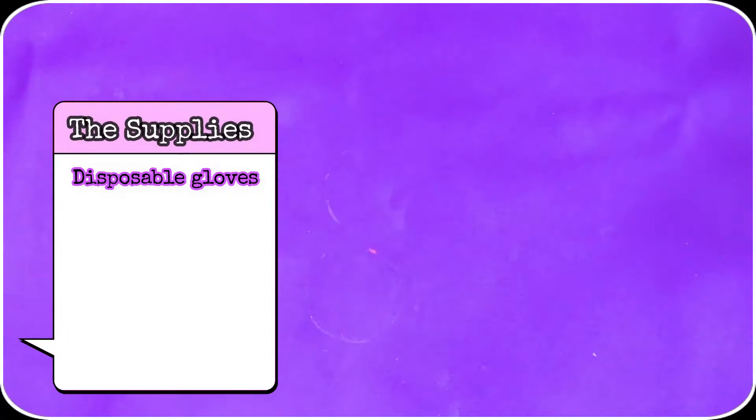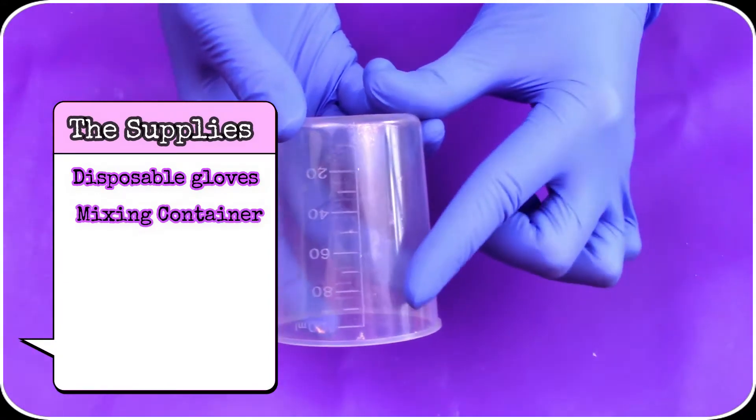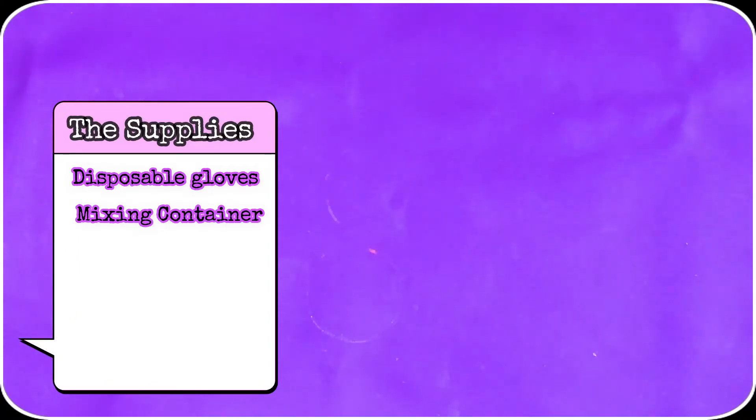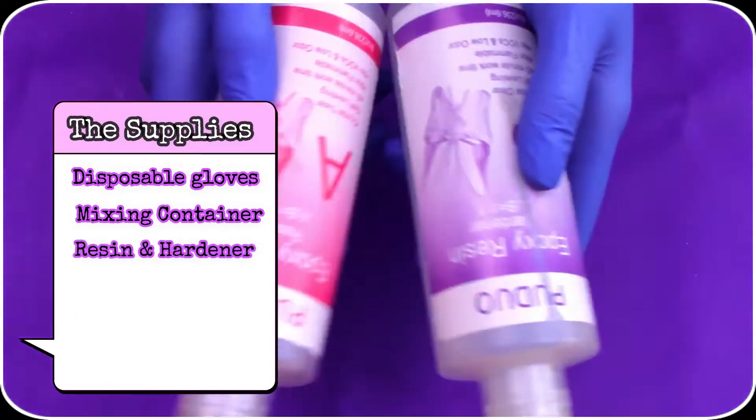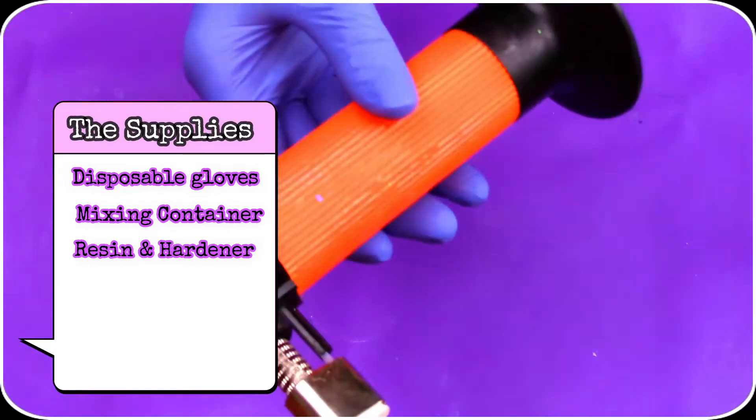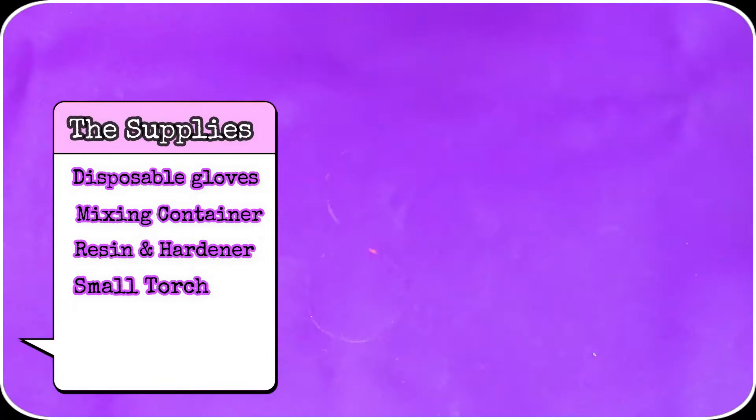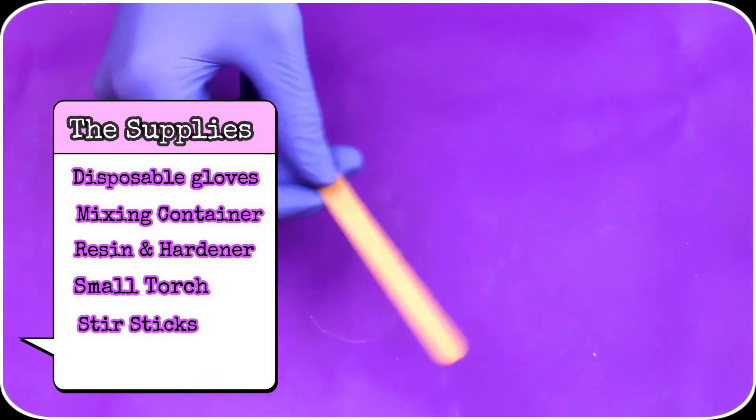First off, protect your hands with some disposable gloves. Then you'll need a mixing container with measures on the side. Your resin and hardener, of course. A torch for those bubbles. And lastly, a stir stick.